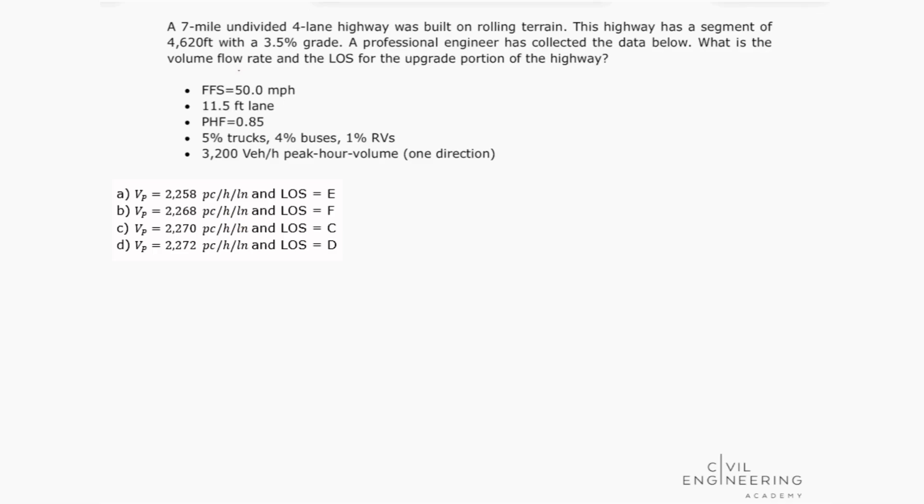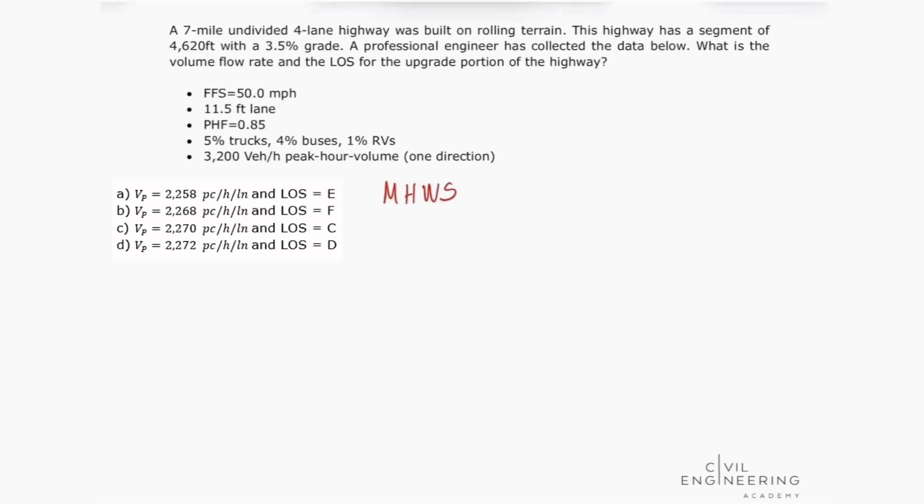So first, we need to identify what type of road we are talking about. In this case, we are talking about a multi-lane highway segment. We know there's no ramps, and this is an undivided four-lane highway. So for this type of problem, our first step would be to calculate the free-flow speed. But thankfully, this was already given to us, so we have that our free-flow speed equals 50 miles per hour.